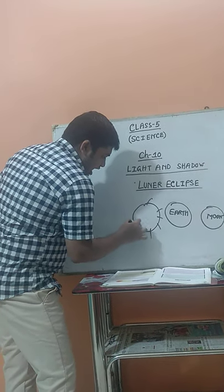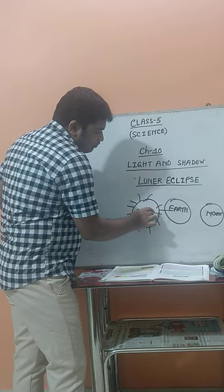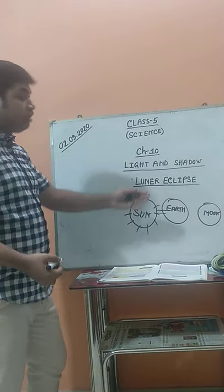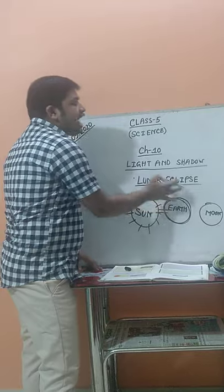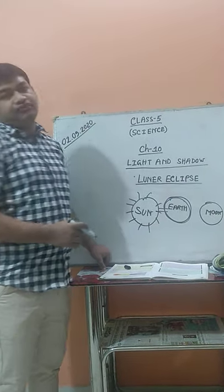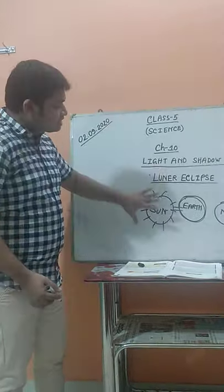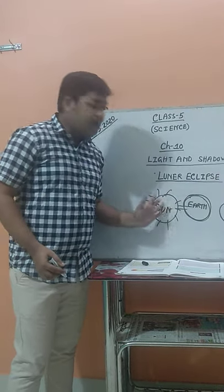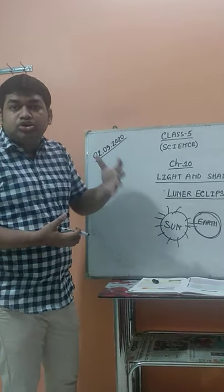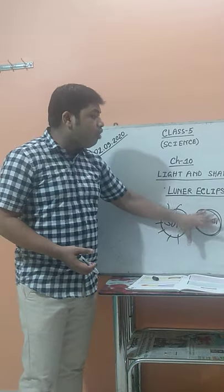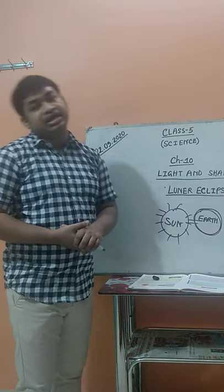When the sun, earth, and moon come in a straight line, the light that is supposed to fall over the moon's surface will be prevented — it will be obstructed by the earth. The earth does not allow the light to pass through to the moon's surface. This phenomenon is known by the name of lunar eclipse.